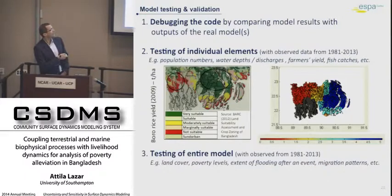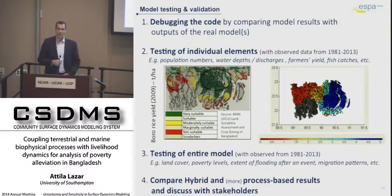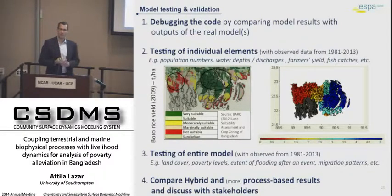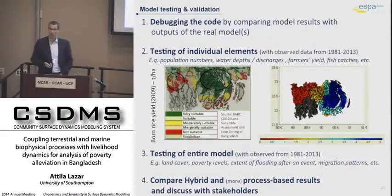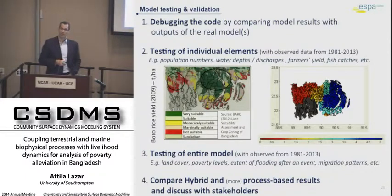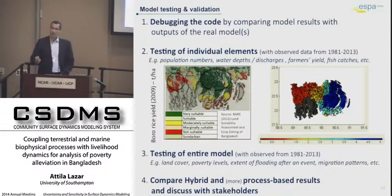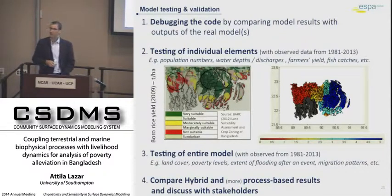The final step is to compare the hybrid and the process-based results, because the hybrid statistical model is 100% representative for this study area — the census data is 100% representative. If they support each other, that's good. If not, we try to learn what makes the difference. These results are discussed with the stakeholders — every time we produce a result, we take it back to the stakeholders for discussion. In the policy cycle, we will allow them to test ideas on how they would tackle some of the results we have from the modeling.